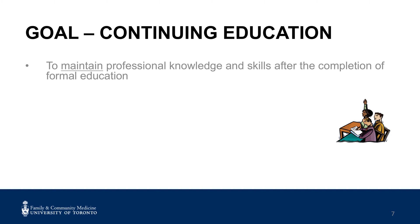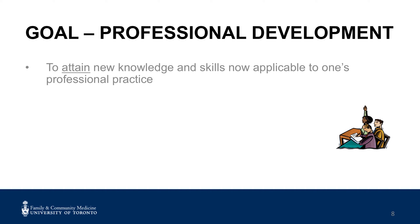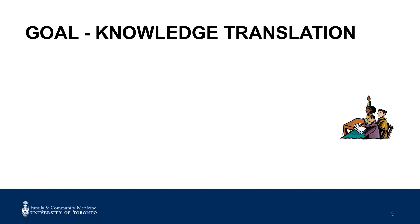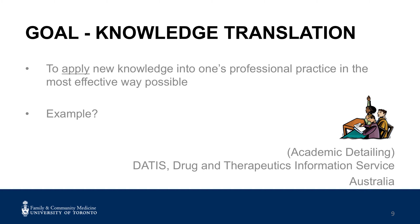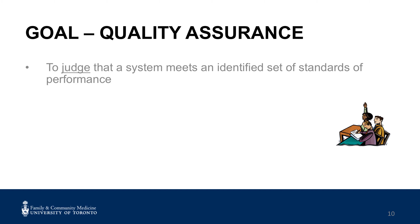To maintain professional knowledge and skills after the completion of formal education — example: Foundation for Medical Education, McMaster University Problem-Based Small Group Learning. Goal — Professional Development: to attain new knowledge and skills now applicable to one's professional practice. Example: learning Cognitive Behavioral Therapy because of the prevalence of mental health issues in your practice. Goal — Knowledge Translation: to apply new knowledge into one's professional practice in the most effective way possible. Example: Academic Detailing Drug and Therapeutics Information Service, Australia. Goal — Quality Assurance: to judge that a system meets an identified set of standards of performance.